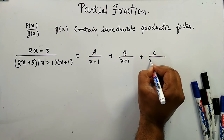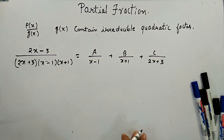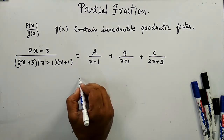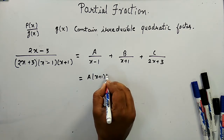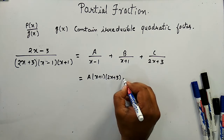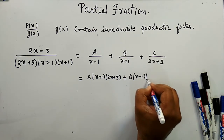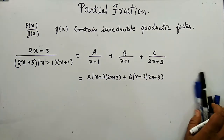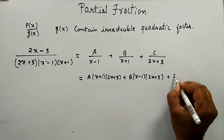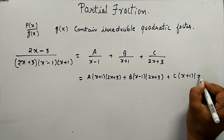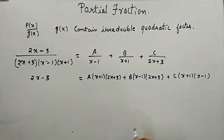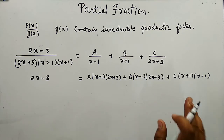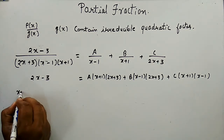The partial fraction form is A/(x - 1) + B/(x + 1) + C/(2x + 3). Taking the LCM on the right-hand side we get A(x + 1)(2x + 3) + B(x - 1)(2x + 3) + C(x + 1)(x - 1) = 2x + 3. Now I will find A, B, and C using substitution.